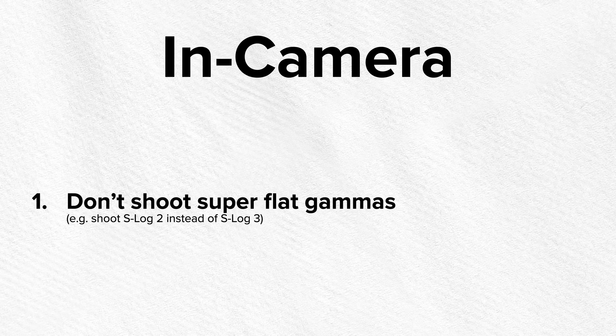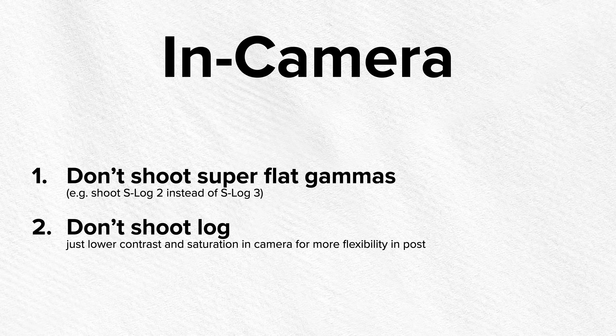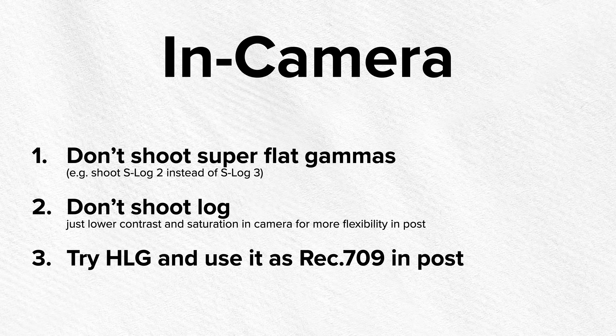Now that you understand the underlying concepts, here are some things you can do in-camera to avoid banding. Number one: don't shoot with super flat log profiles. For example, instead of S-Log3, go for S-Log2. Look up your camera manufacturer's log profiles and choose the least flat one. Alternatively, don't shoot log at all — if you still want flexibility in post, just lower contrast and saturation in-camera; this gives a more flexible image than straight Rec.709. Another solution, if your camera offers it, is to give HLG a try and convert it to Rec.709 in post. HLG grades wonderfully when converted to Rec.709, even with 8-bit cameras.